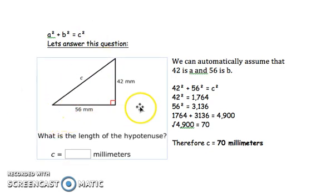As I told you before, this can be a, this can be b, or this can be a and this can be b. And this is c because it is the hypotenuse and is on the opposite side of the right triangle. And we are trying to find c. So right now I am going to keep 42 as a and 56 as b, and we are going to substitute these numbers into our equation.